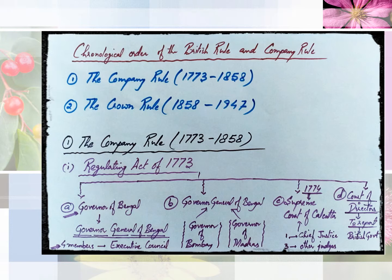The Governors of Bombay and Madras Presidencies were subordinate to the Governor General of Bengal, who was the supreme head. In 1774, by this act, the Supreme Court of Kolkata was established, with one Chief Judge and three other judges. The Court of Directors was required to report to the British government for all actions relating to revenue, civil and military affairs in India.